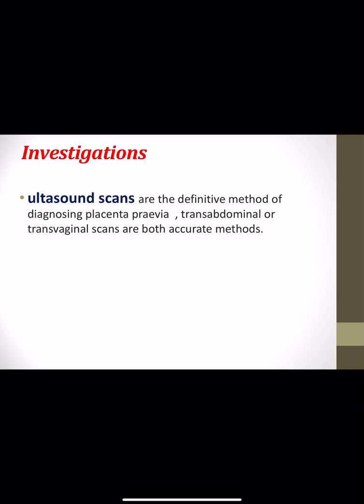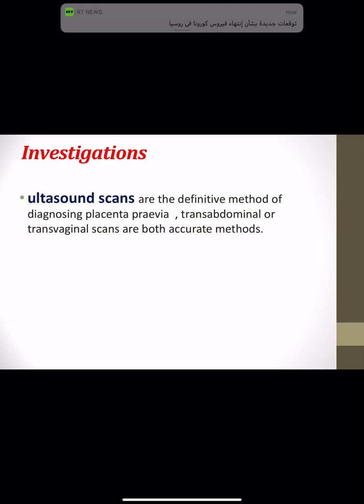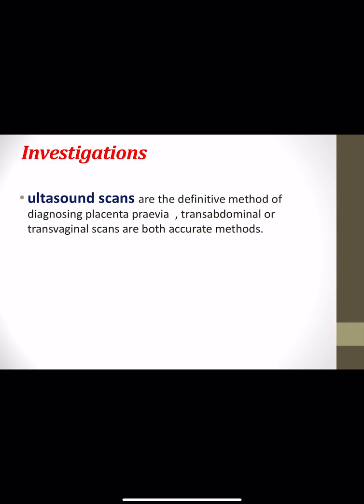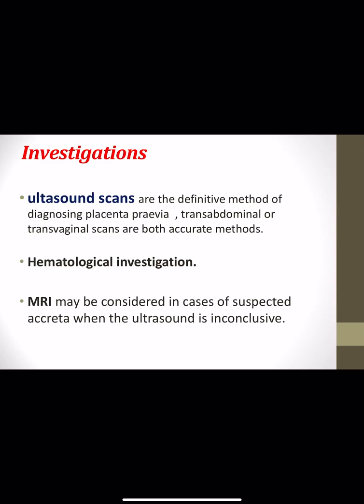Ultrasound is the main diagnostic tool and definitive method for diagnosis of placenta previa. Both transabdominal and transvaginal ultrasound scan are accurate methods. Hematological investigations should also be done, including complete blood picture, coagulation screen, and cross-matching of blood. MRI should be considered if placenta previa accreta or increta is suspected or cannot be diagnosed by ultrasound.